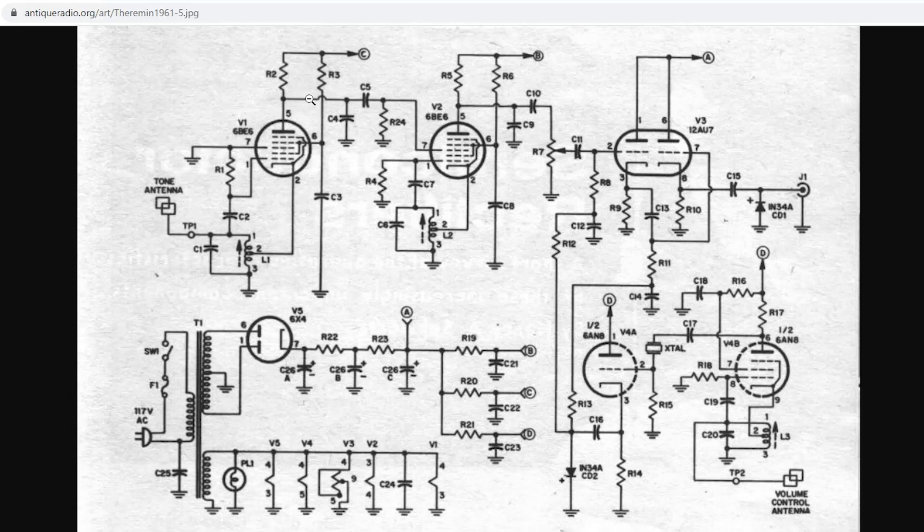This frequency output is then fed into the second control grid of the second 6BE6 vacuum tube. Now imagine that this circuit is oscillating at around 450 kHz, and this circuit is oscillating at 450 kHz, the exact same. Now what's going to happen is this frequency, because it's fed into this second control grid. This tube is going to act as a mixer, and it's going to spit out the sum and the difference of the two frequencies, the frequency of this oscillator and this oscillator.